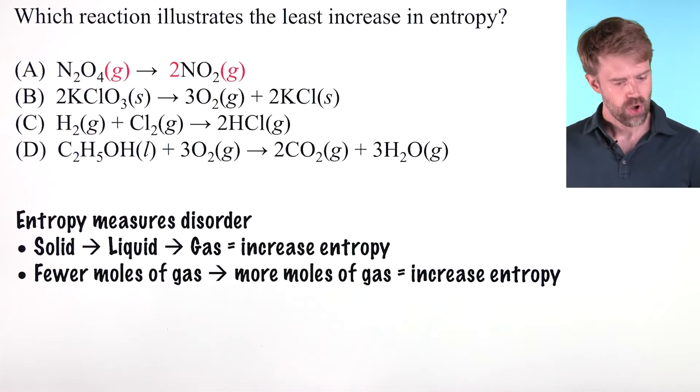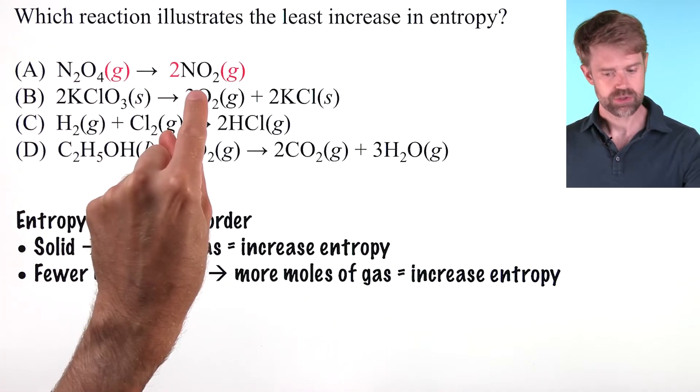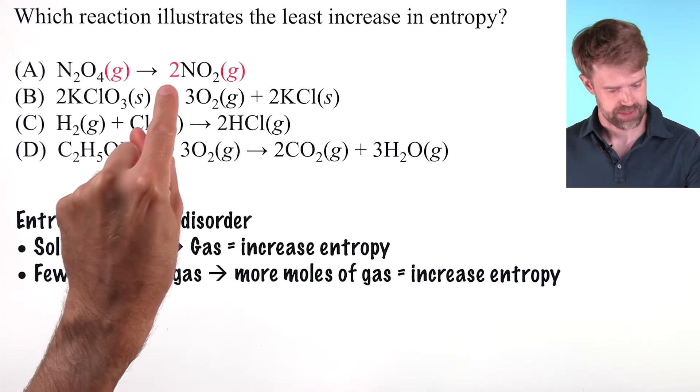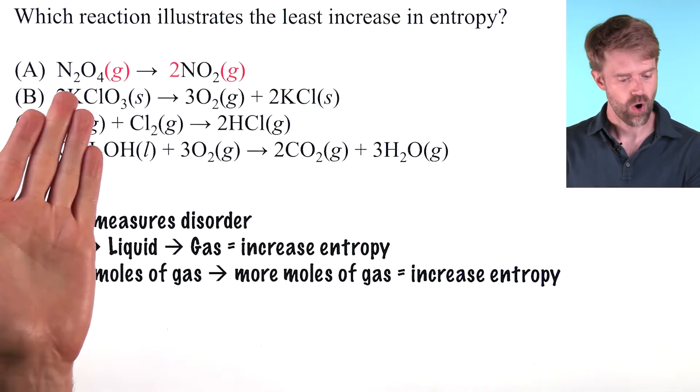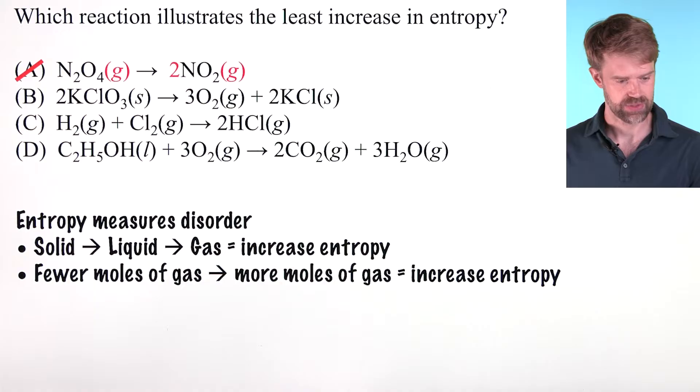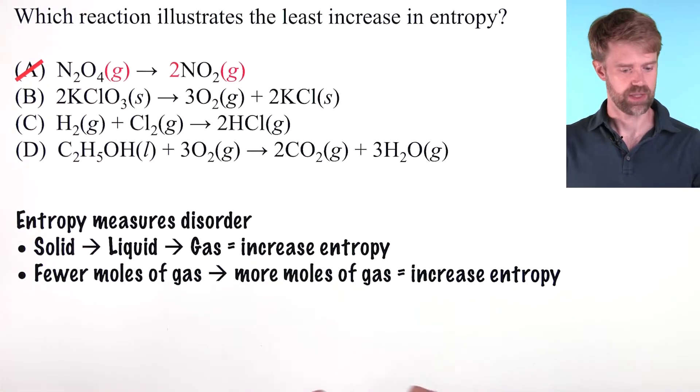What's happening here? Well, we're moving from one mole of gas to two moles of gas. We want to pay attention to the coefficients and to the state symbols when we're doing problems like this. So one mole of gas to two moles of gas. That is a definite increase in entropy. More gas. So we can cross that one off right away.